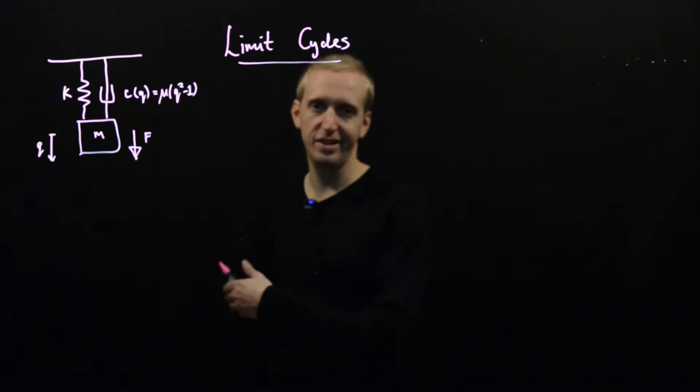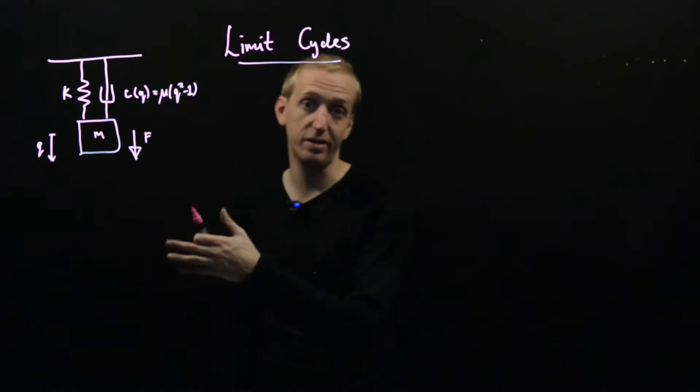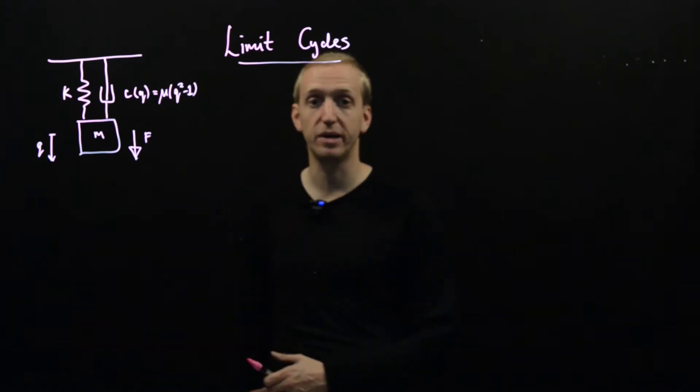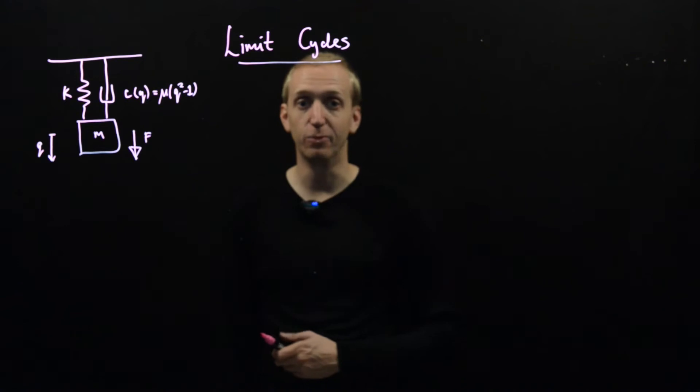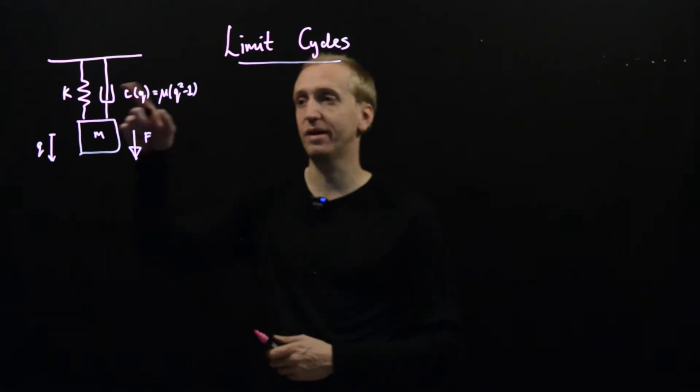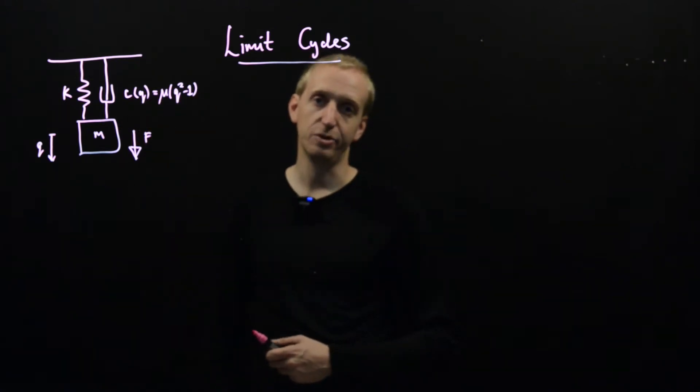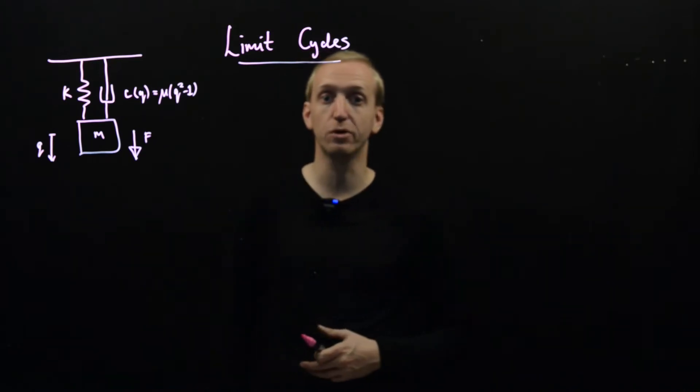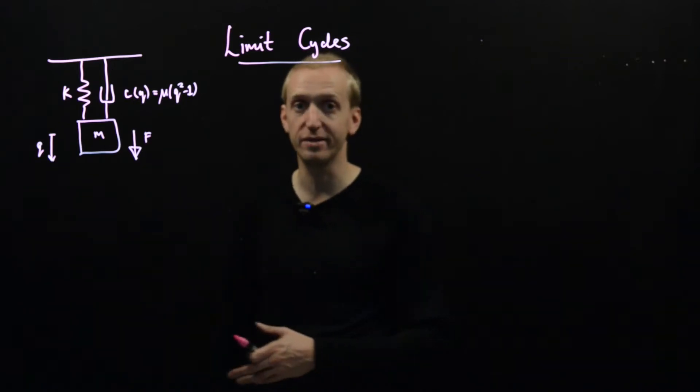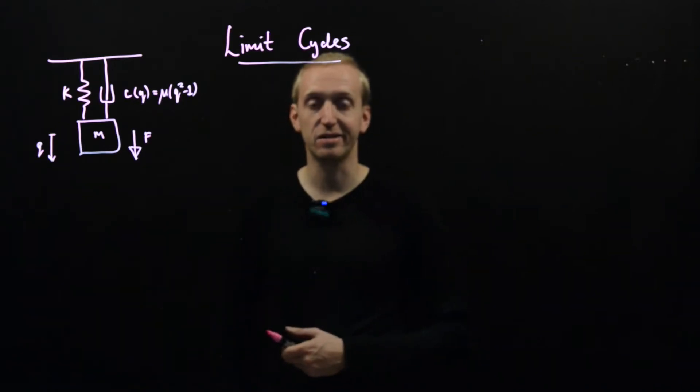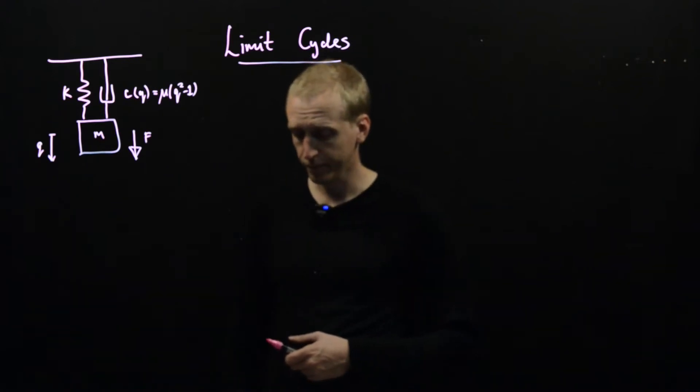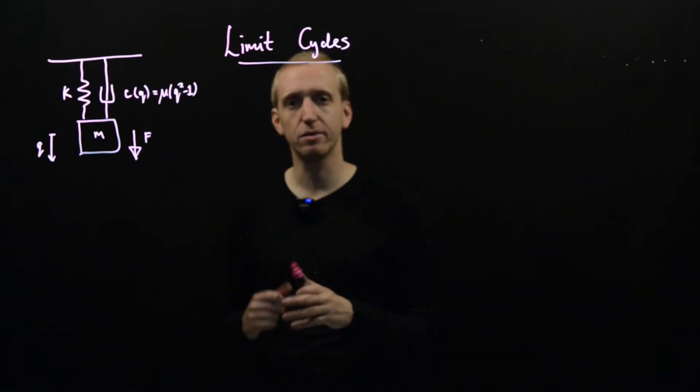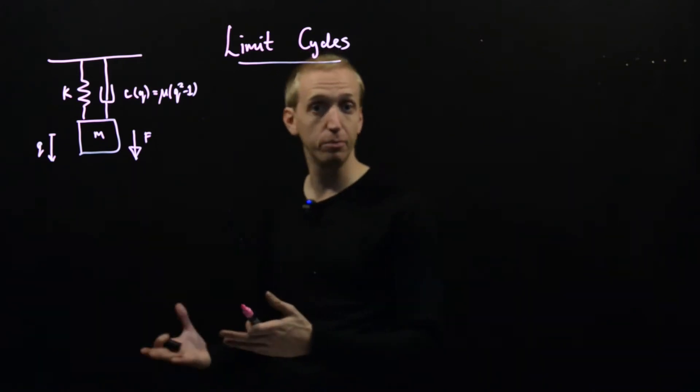They're more commonly built in the electrical domain and indeed this is where this particular limit cycle oscillator was discovered. It was discovered by a guy called van der Pol when he was messing around with some electrical circuits. So it might be hard to build such a non-linear damper, but building equivalent electrical components is much easier and is indeed where this system was first discovered. So this is our system, it's not a course about modelling, so we don't need to worry about where our models come from necessarily.